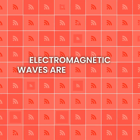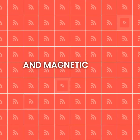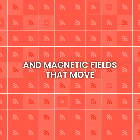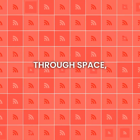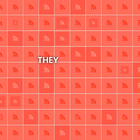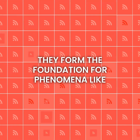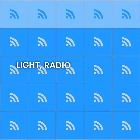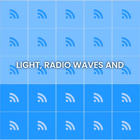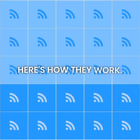Electromagnetic waves are oscillating electric and magnetic fields that move through space, transferring energy. They form the foundation for phenomena like light, radio waves, and x-rays.